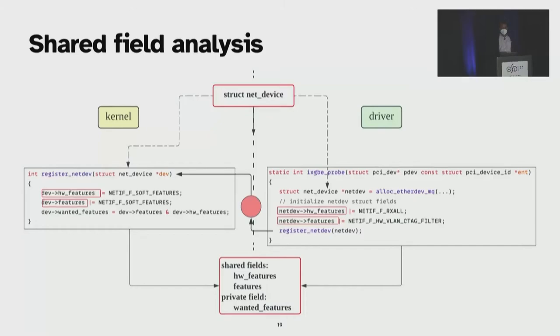Here's an example of a boundary crossing. On the right, there's the driver function that registers the network interface with the kernel by calling register netdev. To analyze this, we start at the interface boundary and do alias analysis on the kernel side and also on the driver side to figure out which fields are shared between them. In the above example, we classify hardware features and features fields as shared, whereas the wanted features, which is operated only by the kernel, as private.